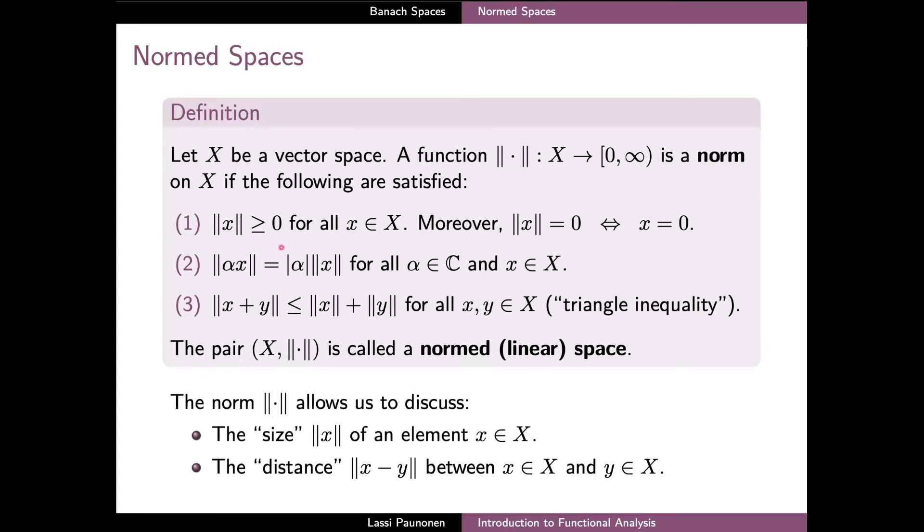The first axiom requires that the norm has a non-negative value for every element X of the vector space, and that the norm is equal to zero precisely if X is the zero element. The second axiom requires that scaling of an element X with the scalar alpha likewise scales the size of the norm X with the absolute value of the scalar alpha. And finally, the third axiom requires that the norm satisfies the so-called triangle inequality, which states that the norm of a sum of two elements X and Y is always less than or equal to the sum of the norms of these two elements.